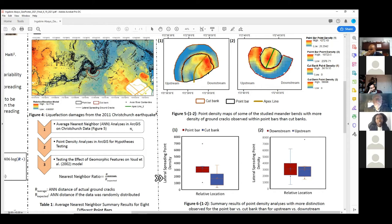For this, we calculated the density of the observed ground cracks for a given area using the point density tool in ArcMap, which is a GIS tool, to assess where the most deformations are, whether it's upstream versus downstream, inside versus the outside of a bend.